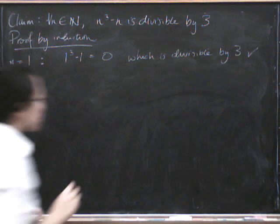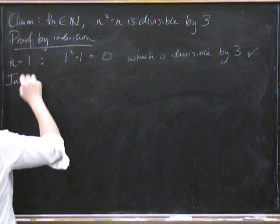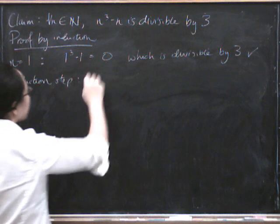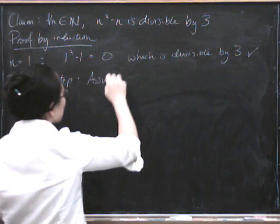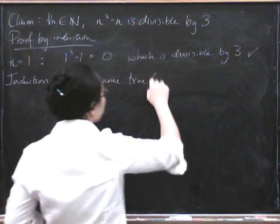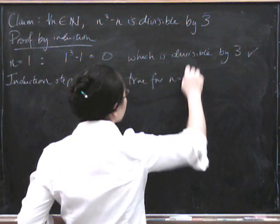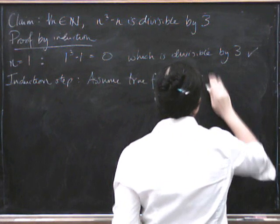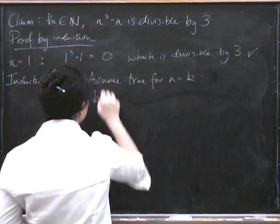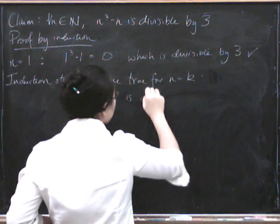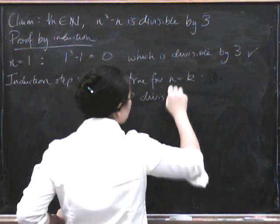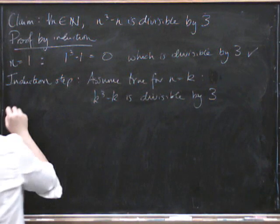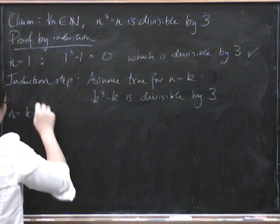So now let's do the induction step. We assume it's true for n equals k. We're going to assume that k cubed minus k is divisible by 3. So now let's look at n equals k plus 1.